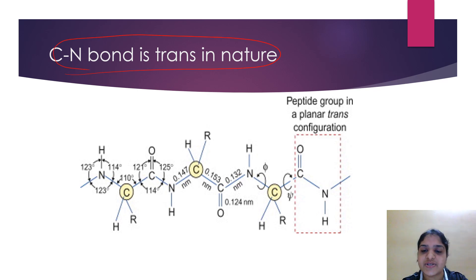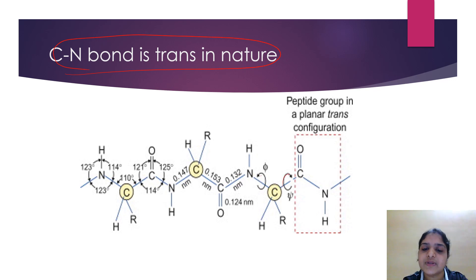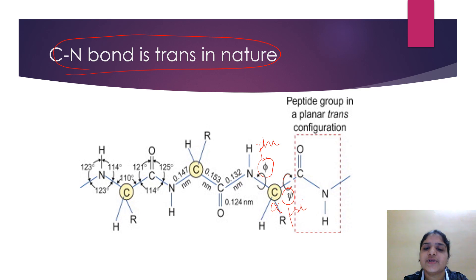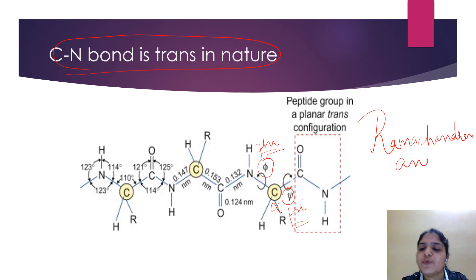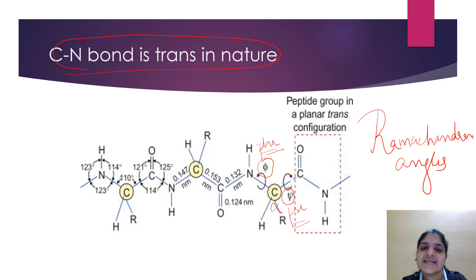The third characteristic: the C-N bond is trans in nature. There is no freedom of rotation in the peptide bond due to its partial double bond character. However, movement along the Cα-C and N-Cα bonds is possible. These angles are called the Ramachandran angles — the N-Cα angle is phi (φ) and the Cα-C angle is psi (ψ). These angles determine the spatial orientation of the peptide chain.